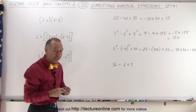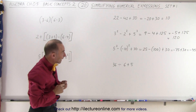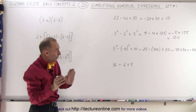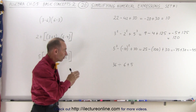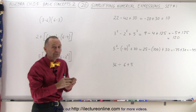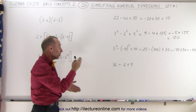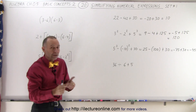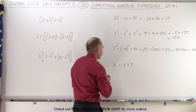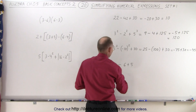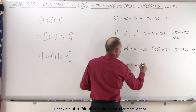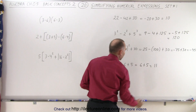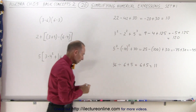Here we have a division and an addition. We should do the division first, then the addition. Even if the division is on the left or right, it doesn't matter — it comes first. So 36 divided by 6 equals 6, then we add the 5, which is therefore equal to 11.